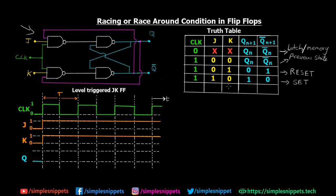Let's look at the last state and understand level triggering. You can see a timeline graph of the signals — the green one is the clock signal, going from 0 to 1, which is the level triggered waveform. The JK flip-flop is only activated when the clock is high. When the clock is 0, no matter what the input, the JK flip-flop always remains in latch or previous state.